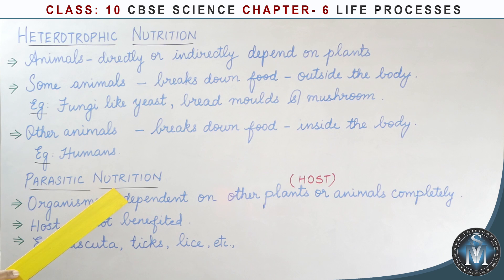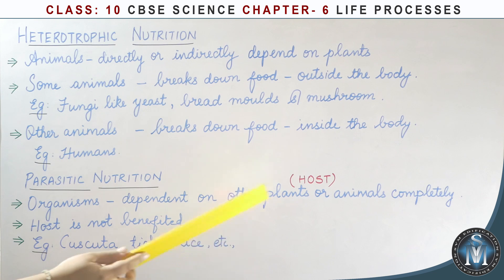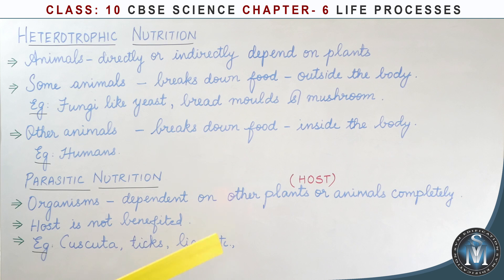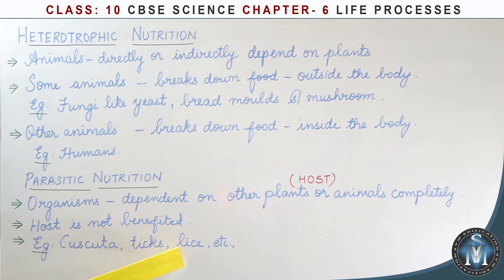Parasitic nutrition: these organisms are dependent on other plants and animals, called the host. The parasites benefit from the host. For example, Cuscuta is a parasitic plant. These are some examples of heterotrophic nutrition.